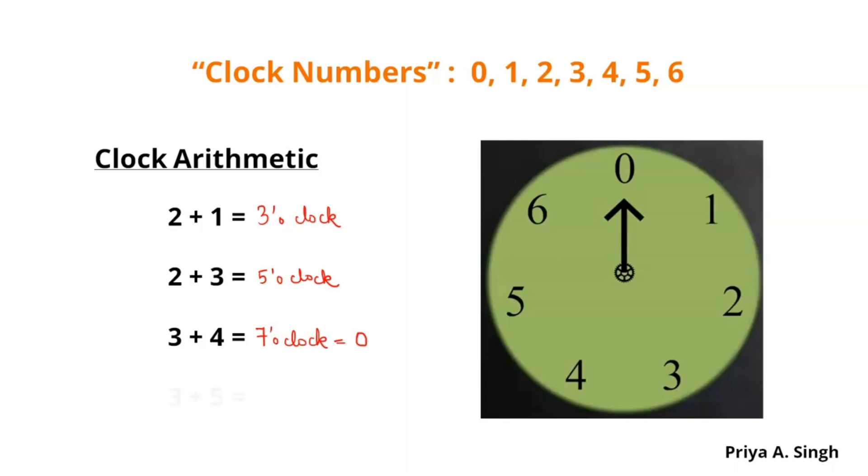But, suppose if we have to add 3 hours plus 5 hours. So, after 3 hours, we count total 5 hours. So, 3 plus 1, then 2, 3, 4, and 5. So, according to this, it is coming at 1 o'clock. But, 3 plus 5, we know that it is total of 8 hours. So, in this case, 8 hours is 1 o'clock. Thus, we can say that 3 plus 5 makes 1. Such a type of an example comes under the topic group theory.